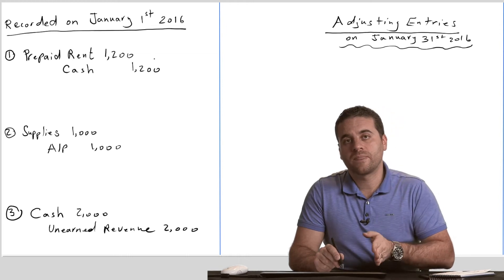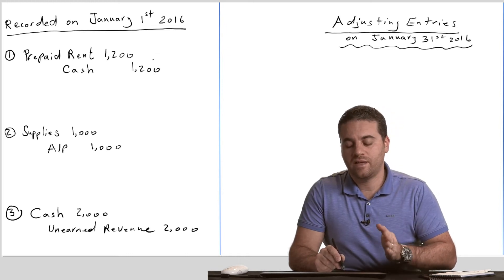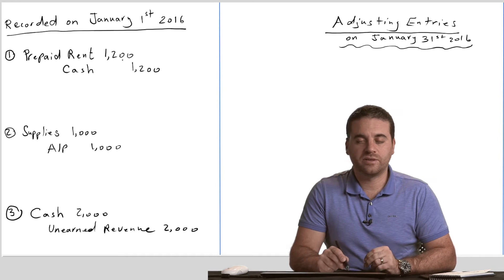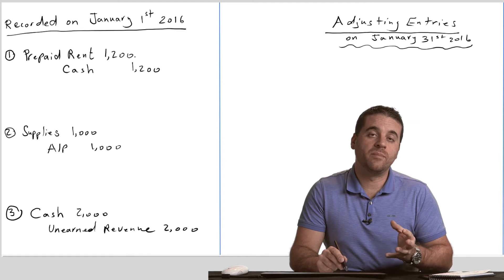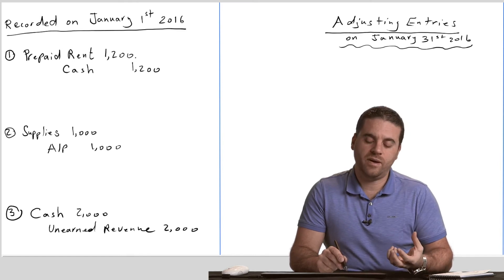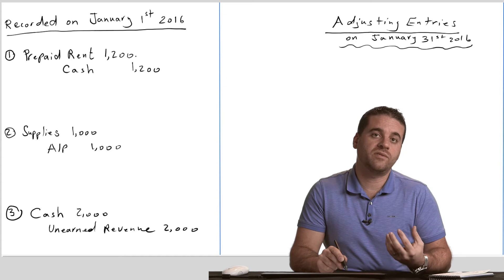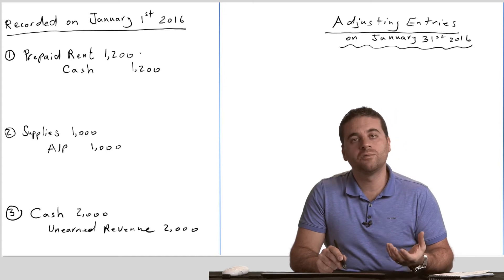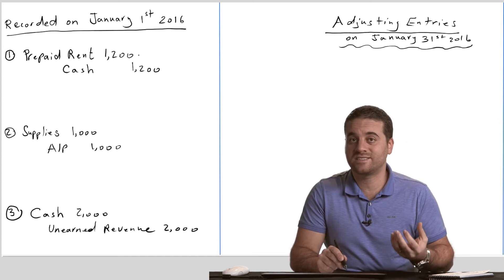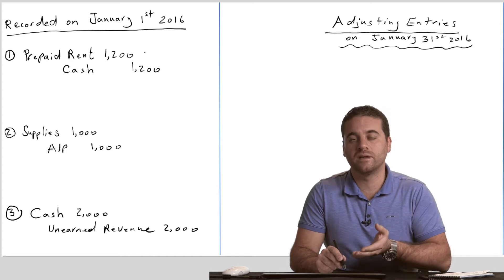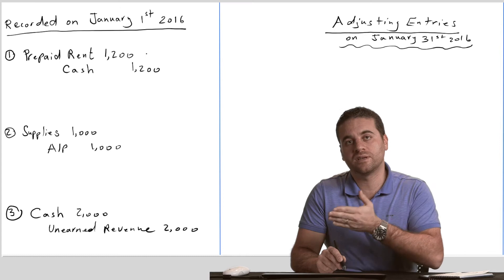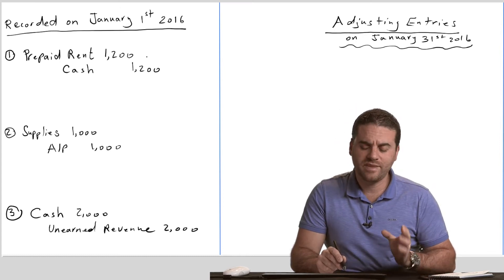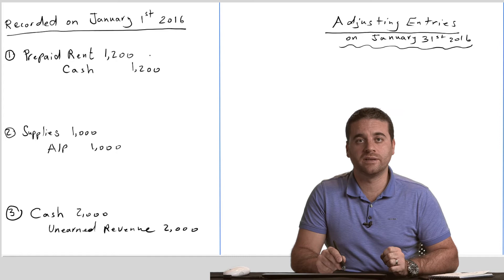We have to consume $100 every month out of the $1,200 of prepaid rent. Prepaid rent is an asset, meaning it's money that we still own. If I consume $100 out of $1,200, I'm not going to own $1,200 anymore. That $100 has to be taken from prepaid rent and transferred to an expense account — that's exactly what we do in our adjusting entries.